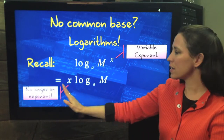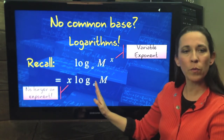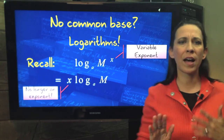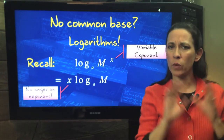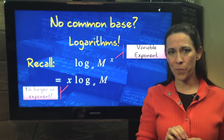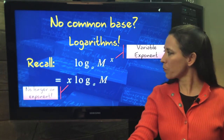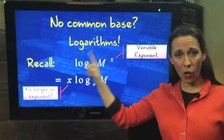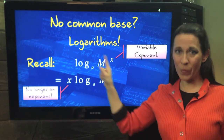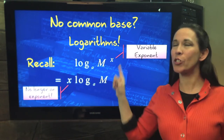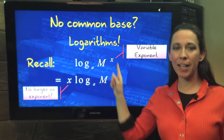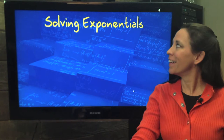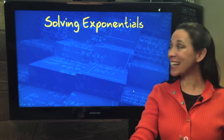When we move it to the front, it's no longer an exponent, and we can deal with it like we've done before to get x by itself — multiply, divide, add, subtract, whatever we need to do. So recall this. We love this. Star it, highlight it. And let's take a look at an example.